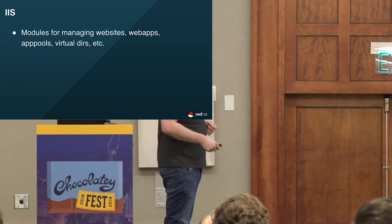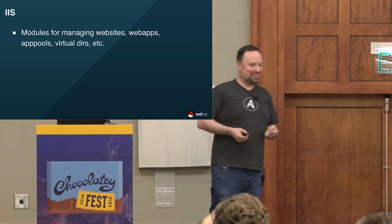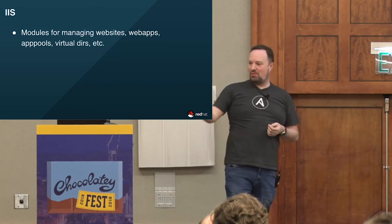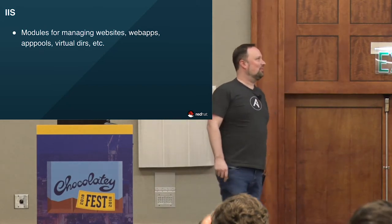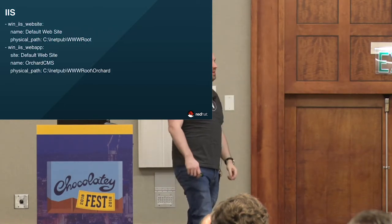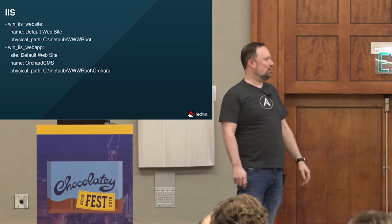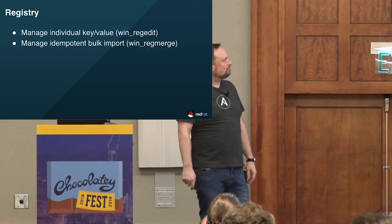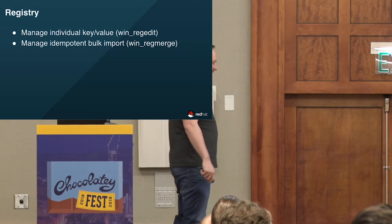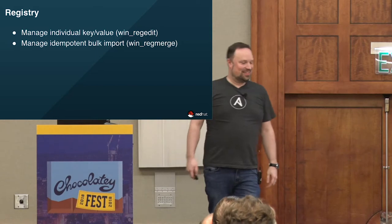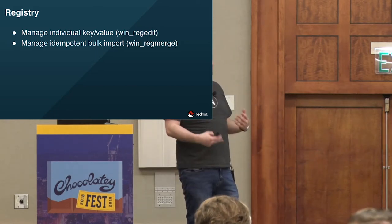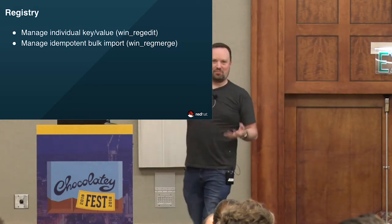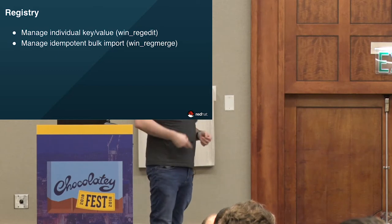IIS is the web server everybody loves to hate, but it's gotten a lot better since the IIS 4 days. Ansible has modules in the box for managing websites, web apps, app pools, and virtual directories. You can create the default website pointing to the inetpub wwwroot physical path, or create an Orchard CMS web app under the default website. For the registry — something unique to Windows — we have the win_regedit module for individual key-value pair management, and win_regmerge for idempotent bulk import of templated reg files.